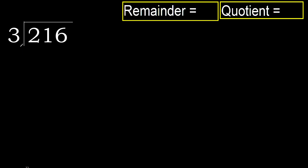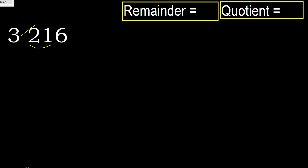216 divided by 3. 2 is less, therefore next. 21 is not less, therefore work with 21. 3 multiplied by which number is nearest to 21 but not greater? 3 multiplied by 8 is 24, which is greater. So 3 multiplied by 7 — 21 is not greater.